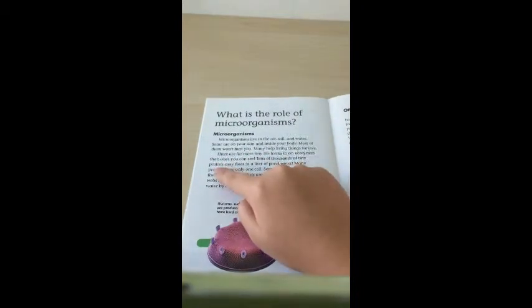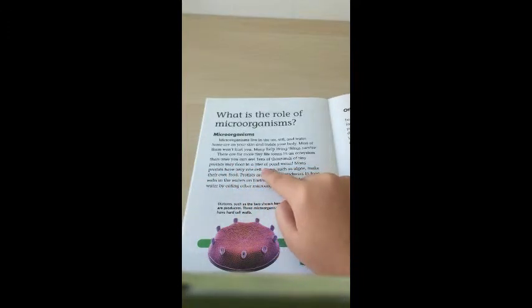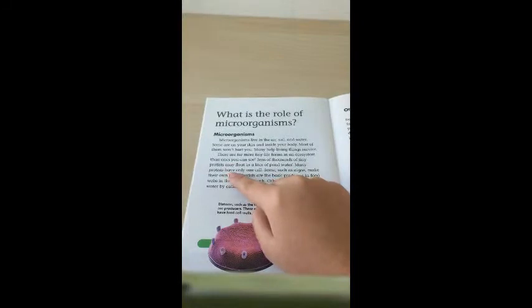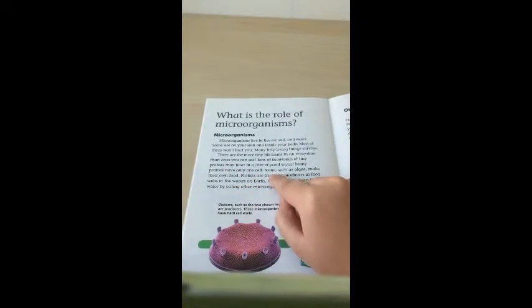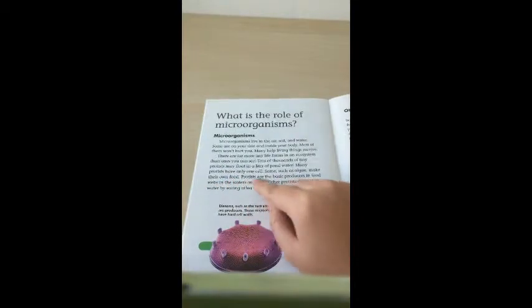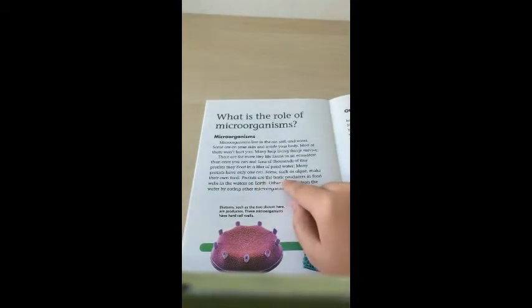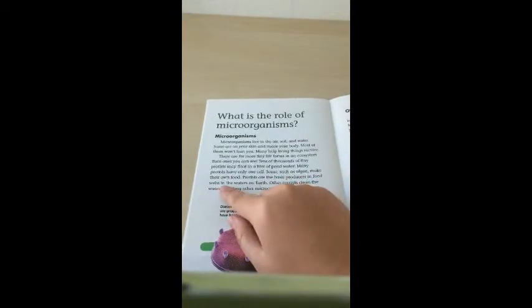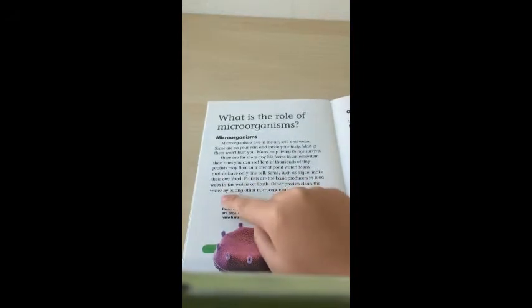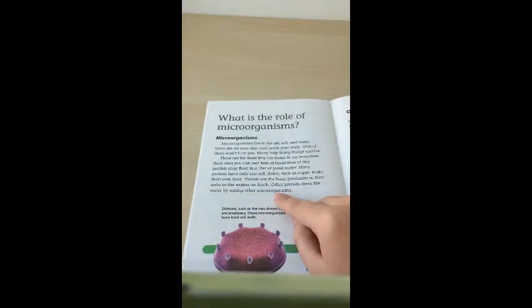Tens of thousands of tiny protists may float in a liter of pond water. Many protists have only one cell. Some, such as algae, make their own food. Protists are the basic producers in food webs in the waters on earth. Other protists clean the water and eat other microorganisms.